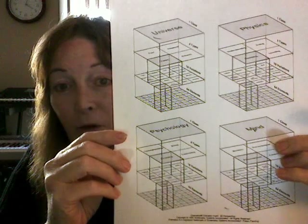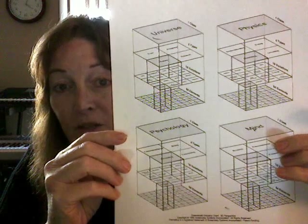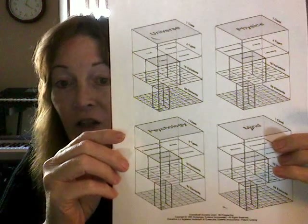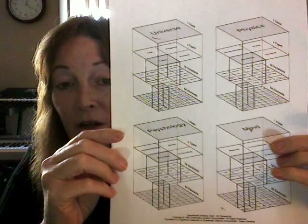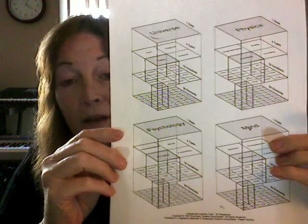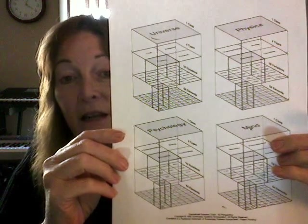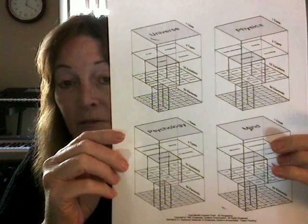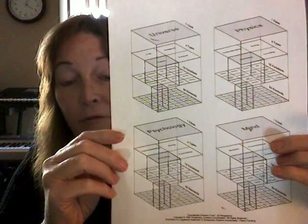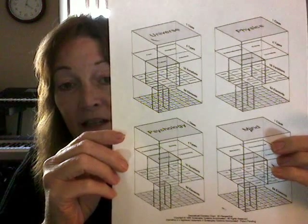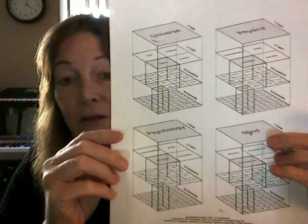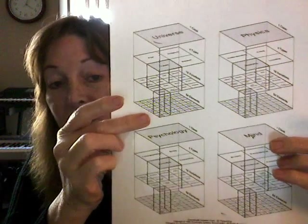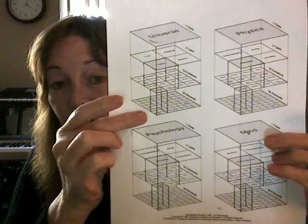You'll see that at the top there are four names: universe, physics, mind, and psychology, and those four items constitute a quad, or a family. Each one is subdivided into four smaller items, and each of those items is further subdivided and then subdivided again until you end up all the way down at the bottom in the very smallest elements of story structure.